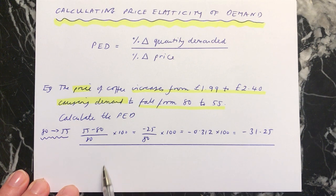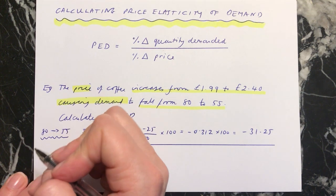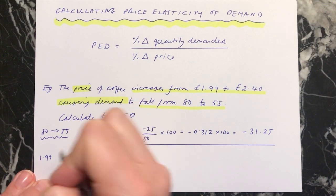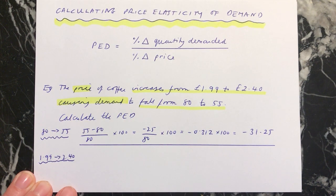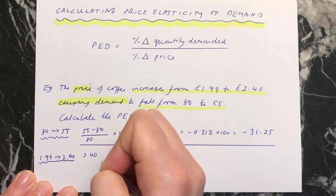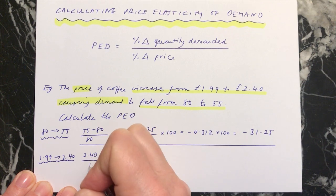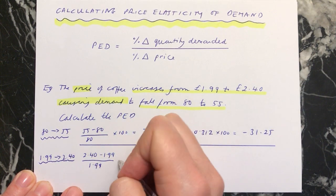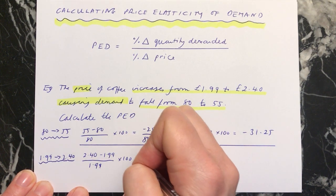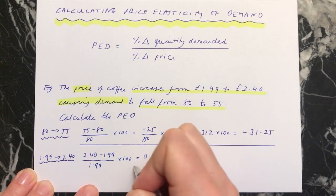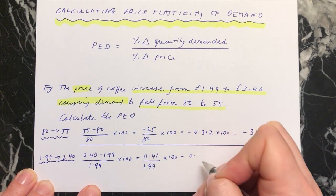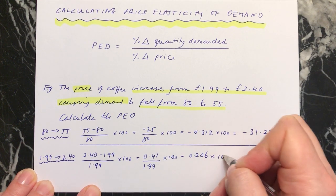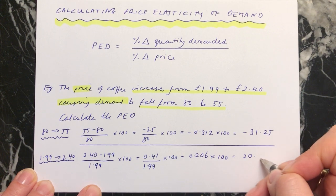You can work through the second one — pause the video, work out the bottom line, and then play again to see the answer. For the bottom line, we've gone from £1.99 to £2.40, so we need to work out the percentage change. It's £2.40 minus £1.99 over £1.99, multiplied by 100. That gives us 0.41 over £1.99 times 100, which equals 0.206 × 100, which equals 20.60.